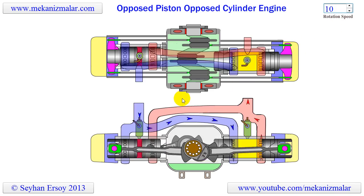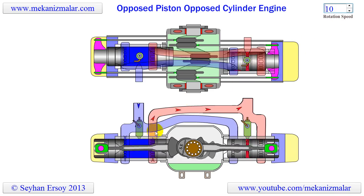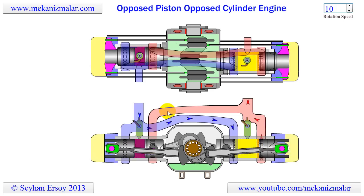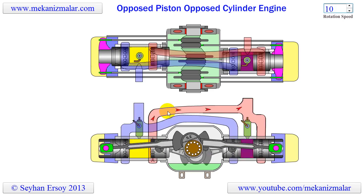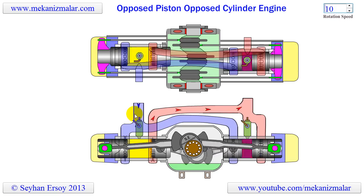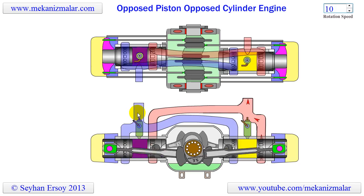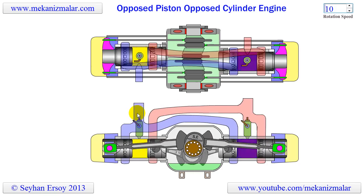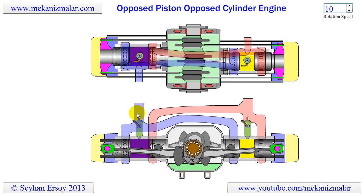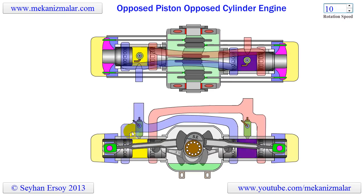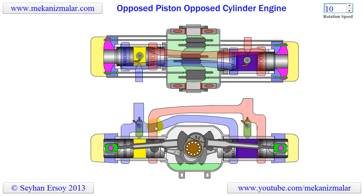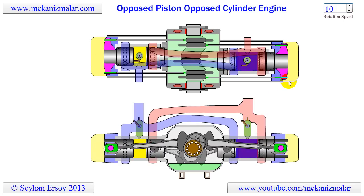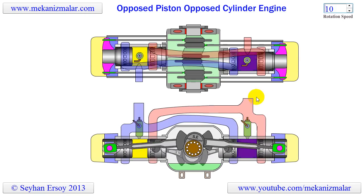At the end of the expansion phase, the exhaust gates open first to discharge the burnt-out gases. After 30 degrees of crank rotation, inlet ports are opened and turbocharged fresh air is pumped into the combustion chamber. This process repeats itself with a 180-degree phase shift at the other cylinder.